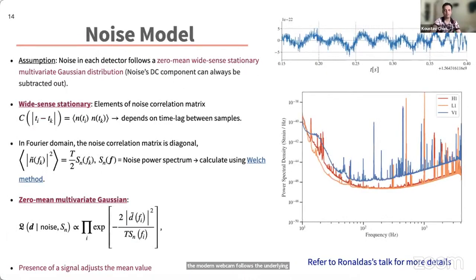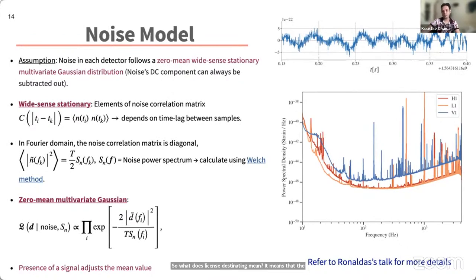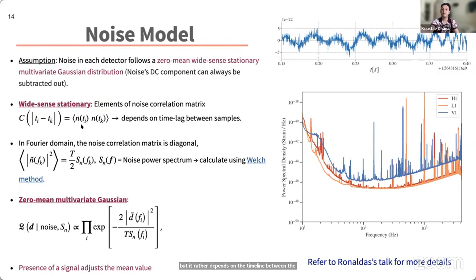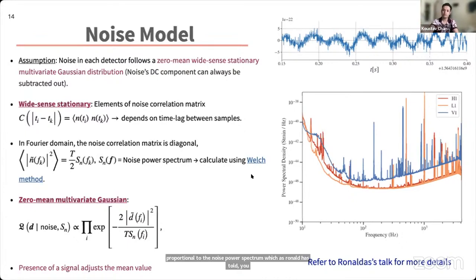When performing gravitational wave signal analysis, we assume the detected data follows a zero-mean, wide-sense stationary, multivariate Gaussian distribution. 'Wide-sense stationary' means the noise correlation matrix depends only on the time lag between samples, not on the absolute time — the noise is time-translation invariant. In the Fourier domain, the noise correlation matrix becomes diagonal, with diagonal entries proportional to the noise power spectral density (PSD). The PSD gives you a measure of the amount of noise power at a given frequency, and can be estimated using techniques such as the Welch method.